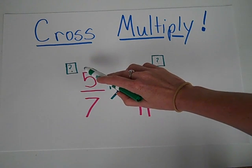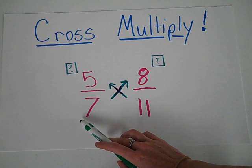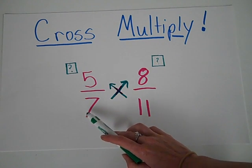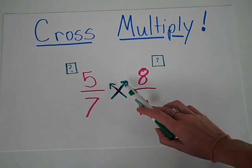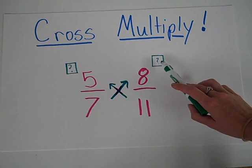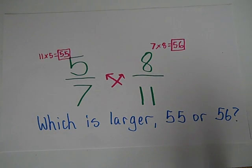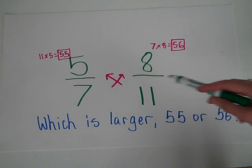You multiply with the opposite numerator. So if I started with my 7th denominator on this side and I go across diagonal to the opposite 8th numerator and multiply that, just like it shows here.